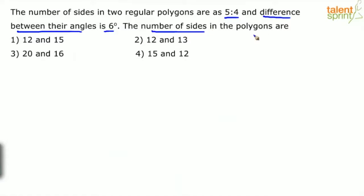Let's assume the number of sides are n and n', so n/n' equals 5/4. The difference between their angles is 6 degrees. When nothing is specified, you have to take it as the interior angle.